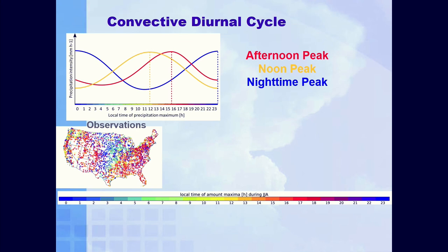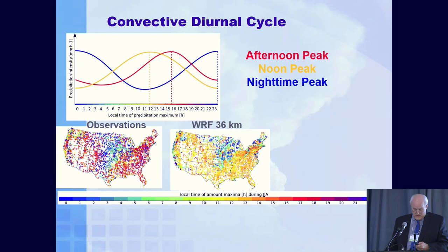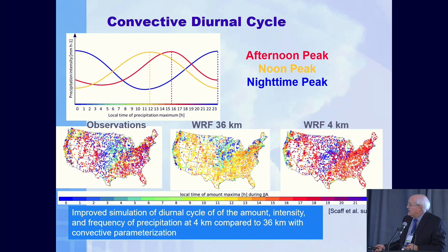What about the diurnal cycle? Here are the observations for the peak in the convective diurnal cycle across the United States. The WRF 36-kilometer run with convective parameterization totally gets the diurnal cycle of convection wrong. But at 4 kilometers, comparing observations to WRF 4 kilometers, it does a really good job. This requires a lot more computer time — we're running on the Yellowstone and Cheyenne supercomputers at NCAR — but we feel it's really worth it.